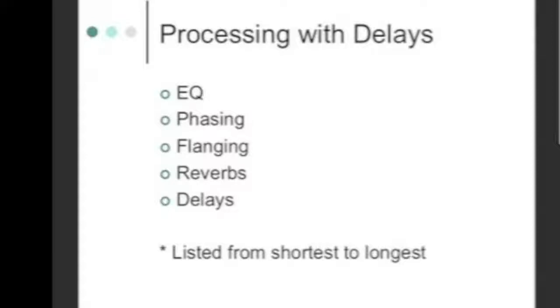EQs are microseconds, flangers are milliseconds, reverbs are a combination of milliseconds at different lengths. Delays can sometimes go up to a second. Let's try to explain what some of these things sound like. EQ everybody kind of knows. It's like in your car, you can change the volume of different frequencies.